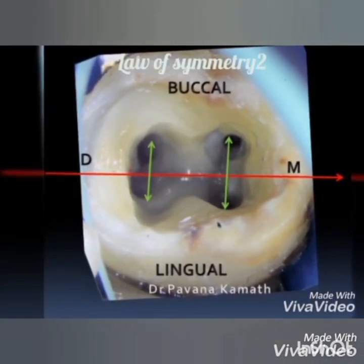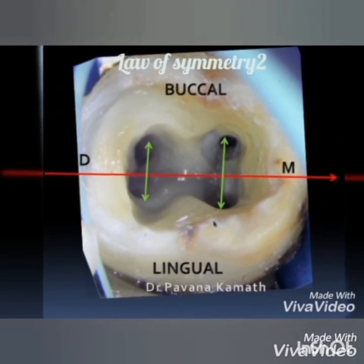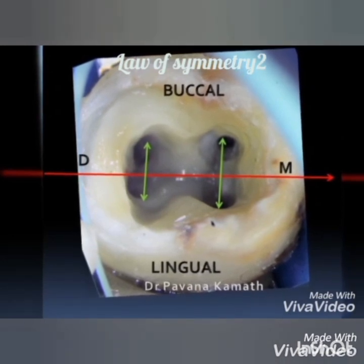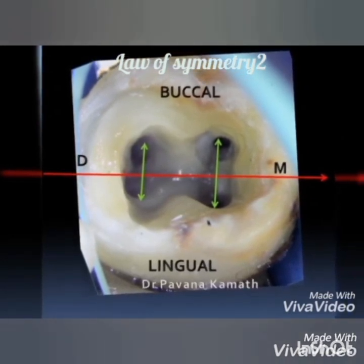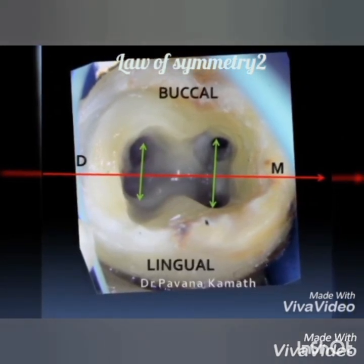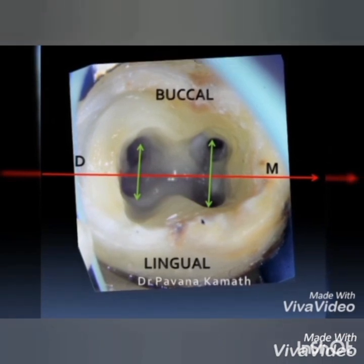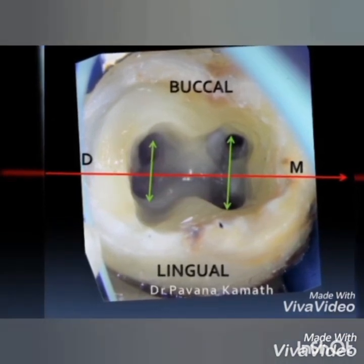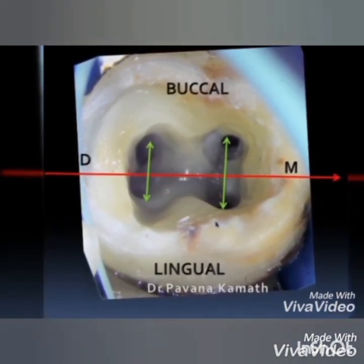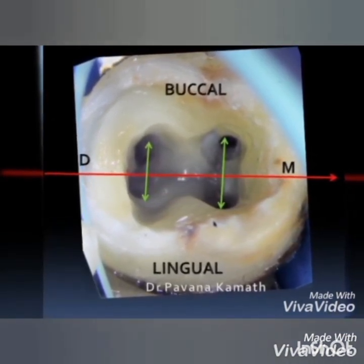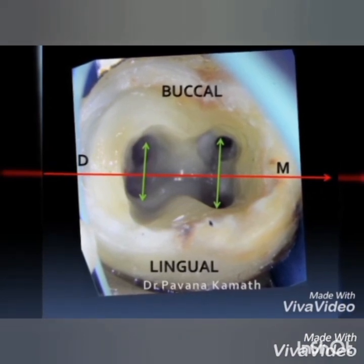The law of symmetry 2 says that except for the maxillary molars, the orifices of the canals lie on a line perpendicular to the line which is drawn mesiodistally through the center of the pulp chamber floor.